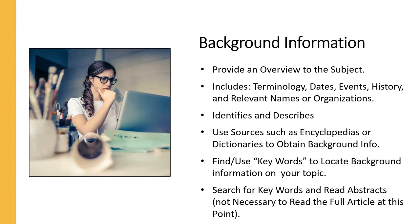Next, we'll move to background information. This background information provides an overview to the subject. This includes terminology, dates, events, history, and relevant names or organizations related to the topic. It helps identify and describe certain aspects of the topic. You would use sources such as encyclopedias or dictionaries to obtain background information. Also, find and use various keywords related to your topic to locate background information on the topic. You can also search for keywords and read abstracts in journals. It's not necessary to read the full article at this point, just the abstract, which is the editor's or author's summary about 130 words or so on the particular article. You don't need to read the entire article at this point, but just glance at the keywords, glance at the abstracts, see if they're relevant to what you're interested in writing on.